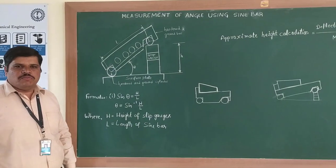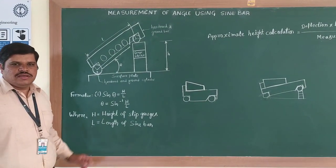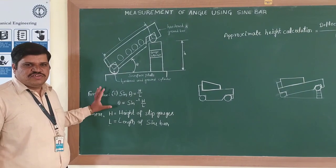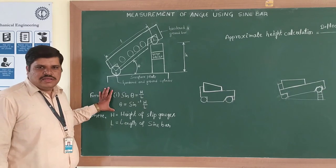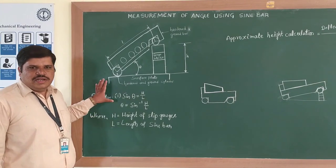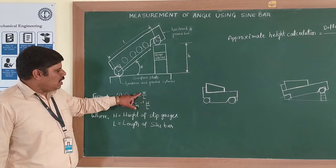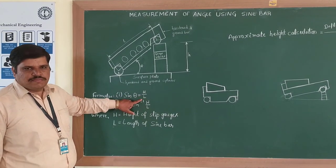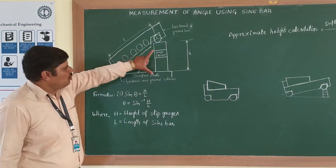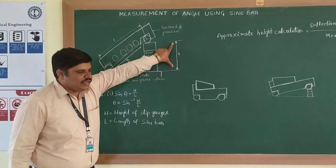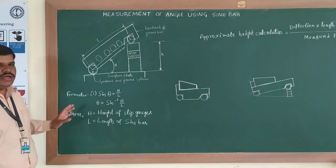If any given component has an angle, we can determine it using a sine bar. The concept of sine bar is based on the trigonometric function: sine equals opposite side divided by hypotenuse. If we know the opposite height and the length of the sine bar, we can determine the angle.